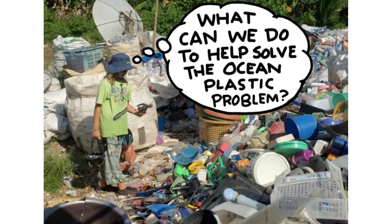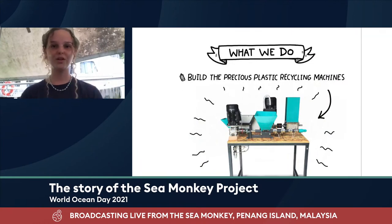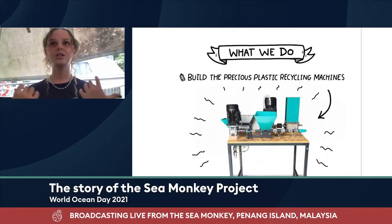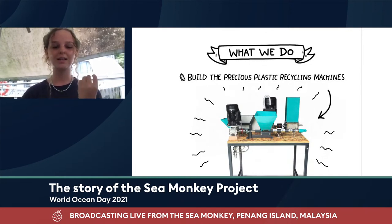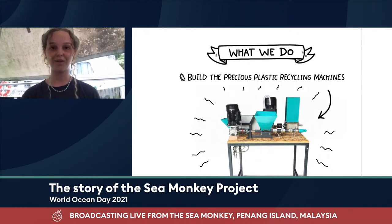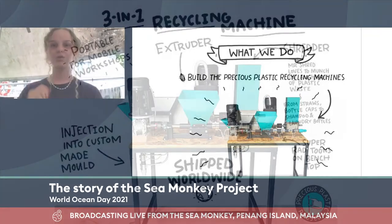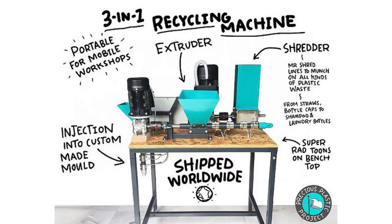My dad and I — I was about 11 at the time — we started building plastic recycling machines. We came to the Precious Plastic recycling machines invented by a man in Holland. We took the open-source blueprints and pioneered on them to make them smaller, more compact, sustainable, and portable. Our dream was to distribute these machines all over Southeast Asia to teach locals how to recycle — not only to clean up their environment but to build a livelihood and feed their families, because plastic pollution greatly affects the fishing industry that many of these villages rely on.